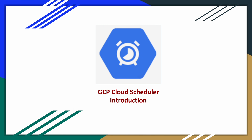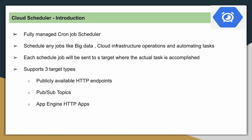Welcome to the GCP data engineering series. In this video we will focus on Cloud Scheduler, covering the introductory part of this service. Cloud Scheduler is a fully managed cron job scheduler. Using Cloud Scheduler, we can schedule any jobs like big data workloads, automate specific tasks, and schedule cloud infrastructure operations.